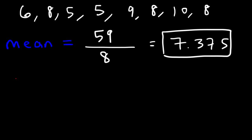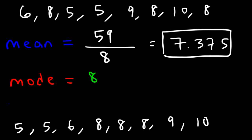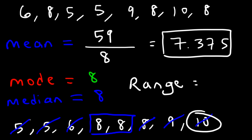Now let's calculate the mode. But before we do that, let's put the numbers in increasing order as we did before. The lowest number is 5 — there are two of them. Then we have a 6, three 8s, a 9, and a 10. Notice that 8 is the number that occurs most frequently — there are three of them — so the mode is 8. Now the median is going to be the middle number. We can get rid of 5 and 10, then 5 and 9, then 6 and the next value. The last two in the middle are both 8, so the median is 8. Now let's calculate the range — it's 10 minus 5, which is equal to 5.